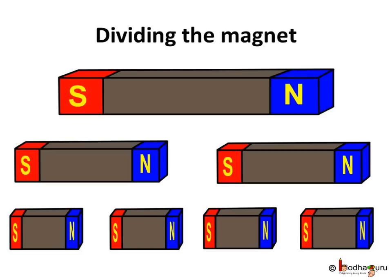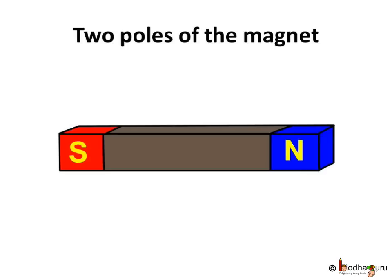Hence, if we cut a magnet into several parts, each part will behave like a magnet and have both the North and the South Pole. Thus, each and every magnet has two poles — North and South.